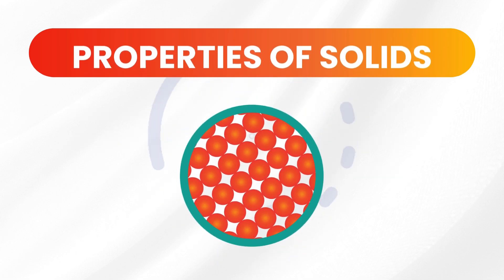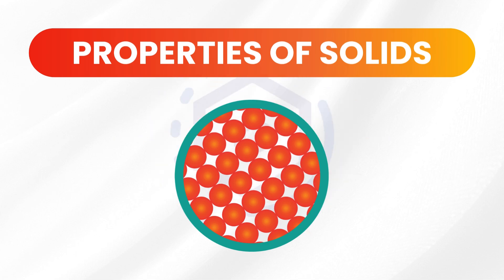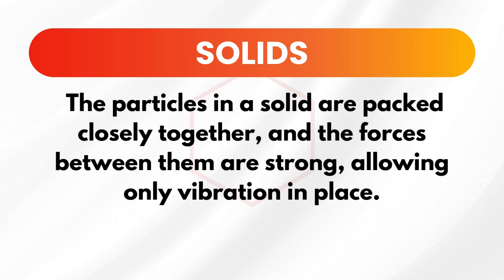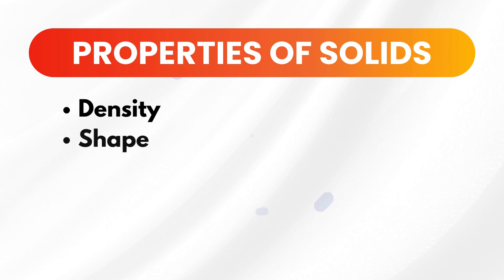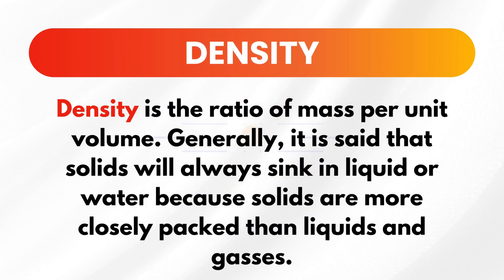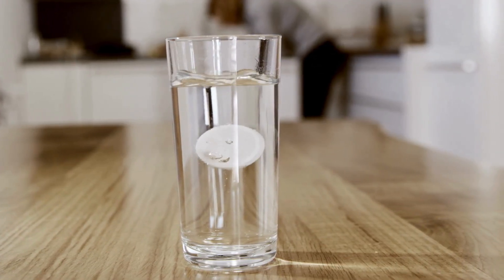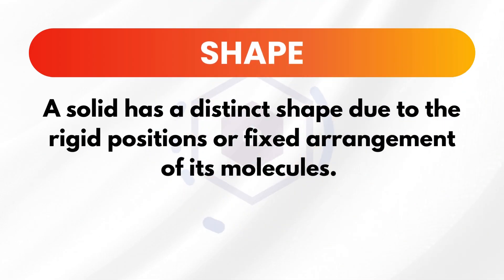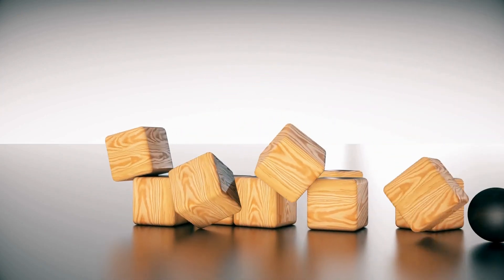Let's take a closer look at each one, starting with solids. A solid is a state of matter that retains its shape and density when not confined. The particles in solids are packed closely together and the forces between them are strong, allowing only vibration in place. The properties of solids are density, shape, thermal expansion, conductivity, brittleness, and malleability. For density, solids generally sink in liquids because their particles are more closely packed than those in liquids or gases. Imagine dropping a rock in water — it sinks because the solid rock is denser than the liquid water. Solids also have a distinct shape because their particles are in a fixed arrangement. For example, a wooden block retains its shape no matter where you place it.